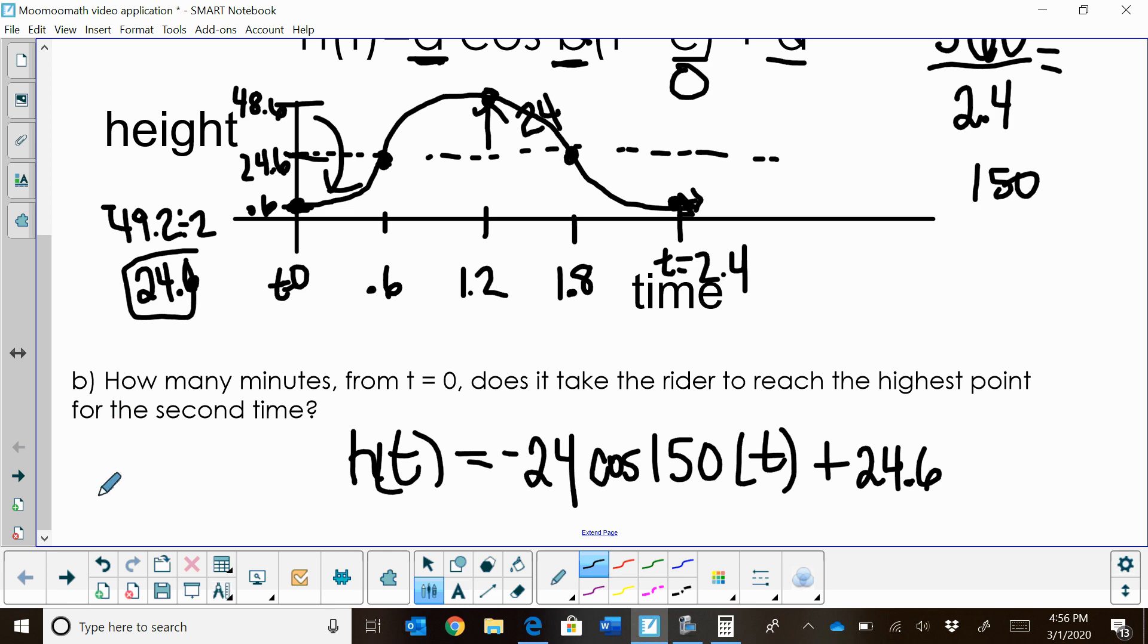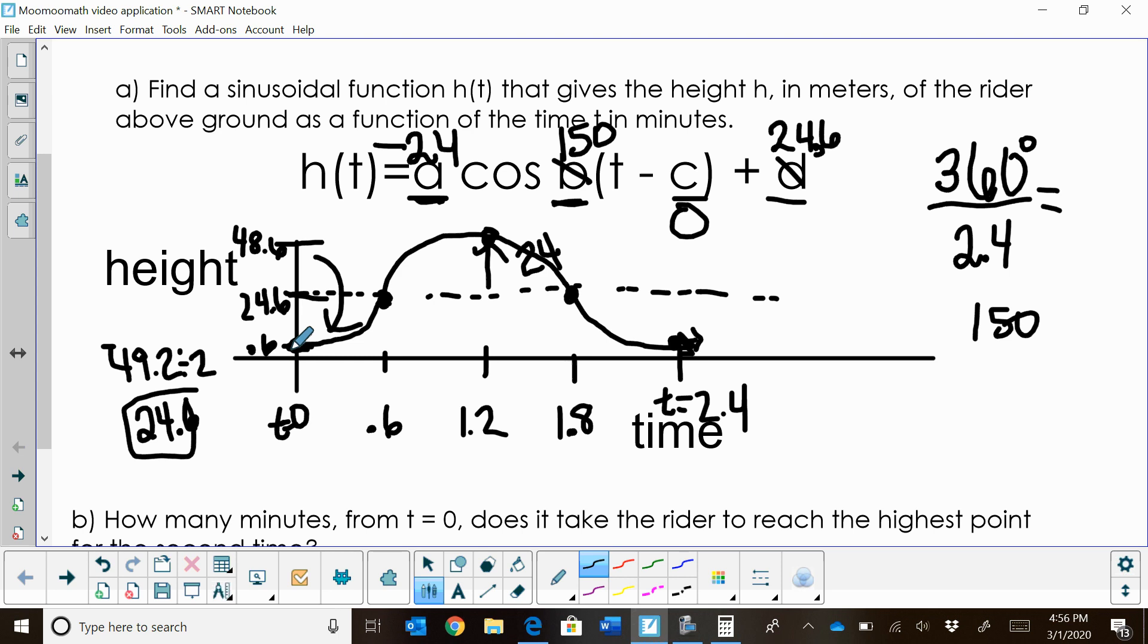So let's look at interpreting that. How many minutes from time T equals 0 does it take the rider to reach the highest point for the second time? We've only drawn the graph through one cycle. So this highest point is only the first time we hit the highest point. So if I extended my graph, how long would it take to reach this second highest point?